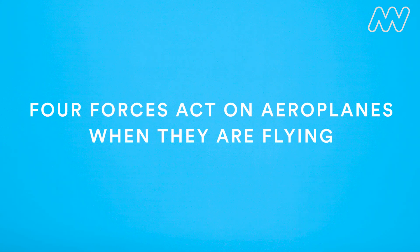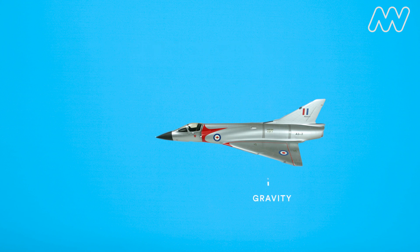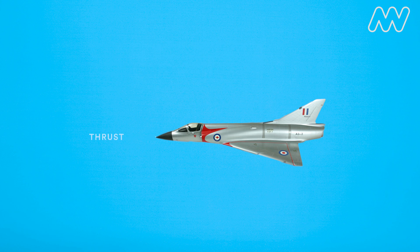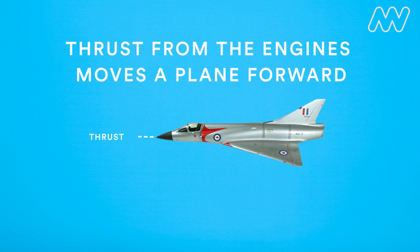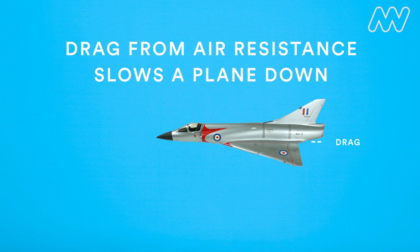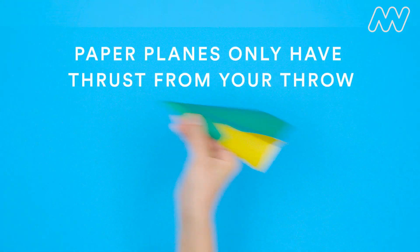Four forces act on aeroplanes when they are flying. Lift keeps a plane in the air. Gravity pulls a plane down. Thrust from the engines moves a plane forward. Drag from air resistance slows a plane down. Paper planes only have thrust from your throw.